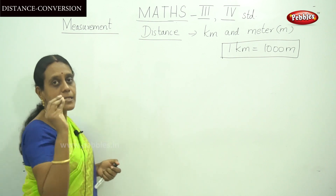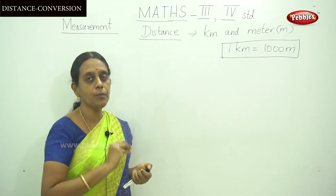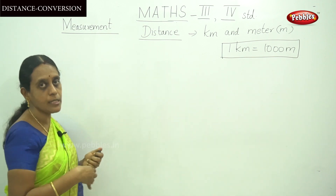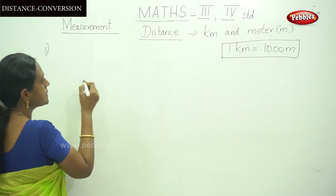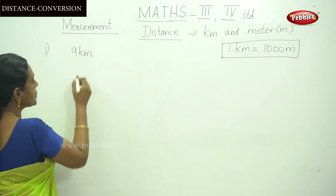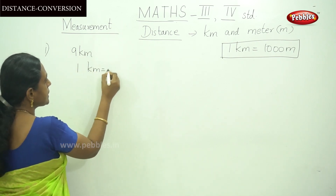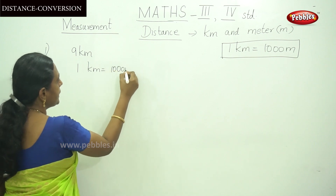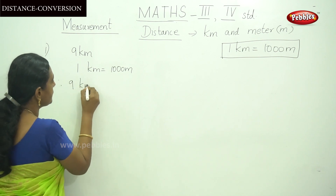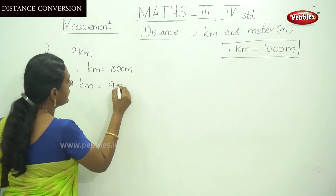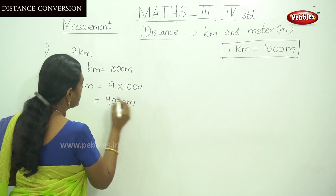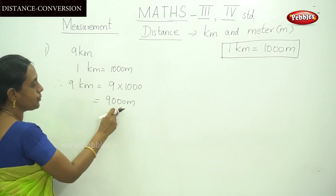I am going to explain with example sums — how to convert kilometer to meter. Because 1 kilometer is equal to 1000 meters, the first sum is 9 kilometers. So, since 1 kilometer equals 1000 meters — this is the unit table — therefore 9 kilometers means 9 into 1000, that means 9000 meters. This is the answer. To convert kilometers to meters, you have to multiply the number.